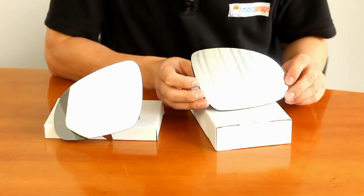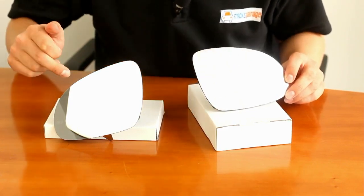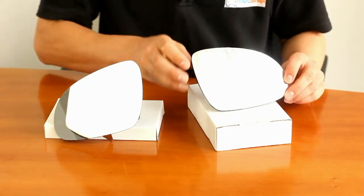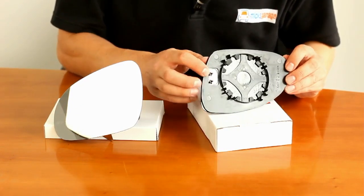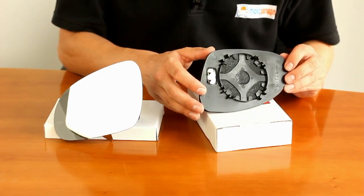The passenger side mirror glass is aspherical. You can see the line down the glass here. It's heated both left and right, and here are the terminals for the heating element.